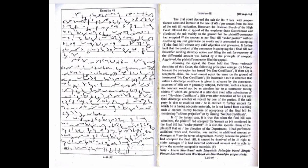In the instant case, it is true that when the final bill was submitted, the plaintiff had accepted the amount as mentioned in the final bill but under protest. It is also the specific claim of the plaintiff that on the direction of the department, it had performed additional work and therefore was entitled to additional amount or damages as per the terms of agreement. Merely because the plaintiff had accepted the final bill, it cannot be deprived of its right to claim damages if it had incurred additional amount and is able to prove the same by acceptable materials.